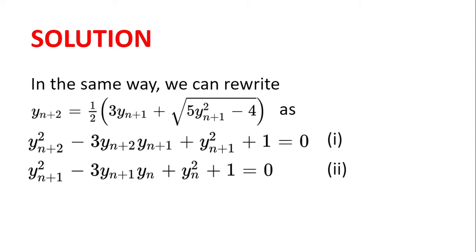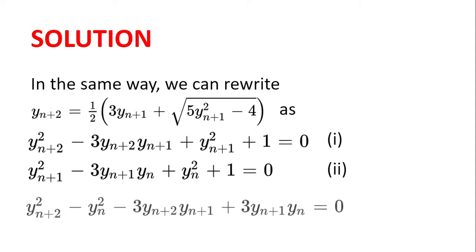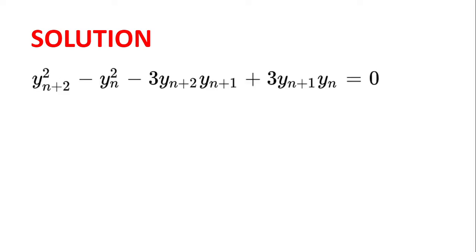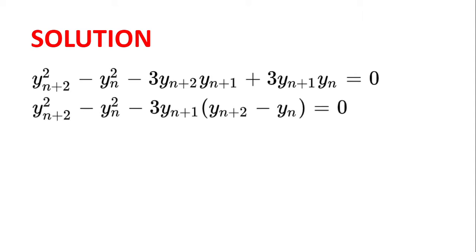Now what we're going to do is subtract the second equation from the first, equation (i) minus equation (ii), to get yₙ₊₂ squared minus yₙ squared minus 3yₙ₊₂yₙ₊₁ plus 3yₙ₊₁yₙ equal to 0. We can factorize the last part to get yₙ₊₂ squared minus yₙ squared minus 3yₙ₊₁ multiplied by yₙ₊₂ minus yₙ equal to 0.